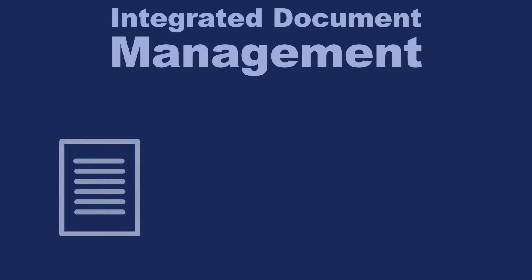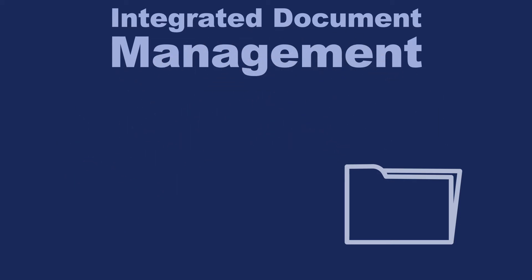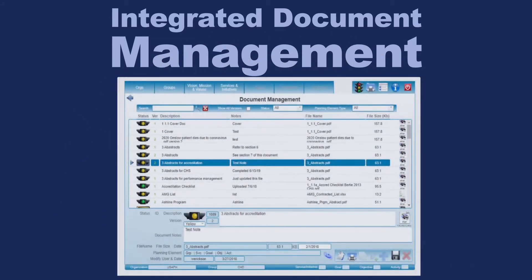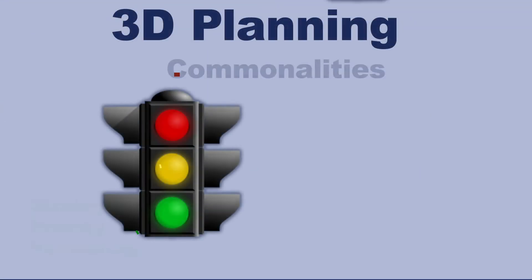A complete document management system was added to the Dashboard, initially to assist departments seeking state or national accreditation. Collecting, organizing, and managing hundreds of documents before they get submitted to EFAB or the state accrediting body can be a daunting task. The document management system allows you to attach documents to any part of any plan, so you always know exactly what and where they are. It's also great for policy management and grant management, where you need immediate access to the related documents.